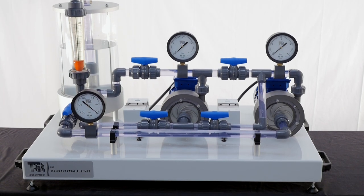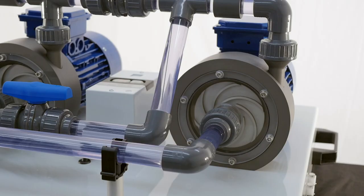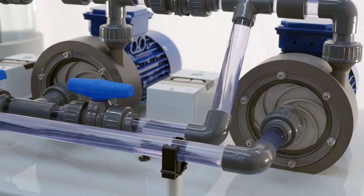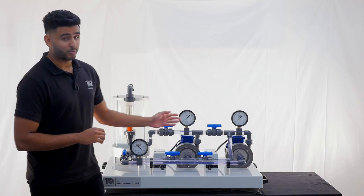The series and parallel pumps is comprised of two identical centrifugal pumps fitted with a clear front cover displaying each impeller. Each pump is driven by its own individual bearing mounted motor, allowing the user to run pumps independently or simultaneously.